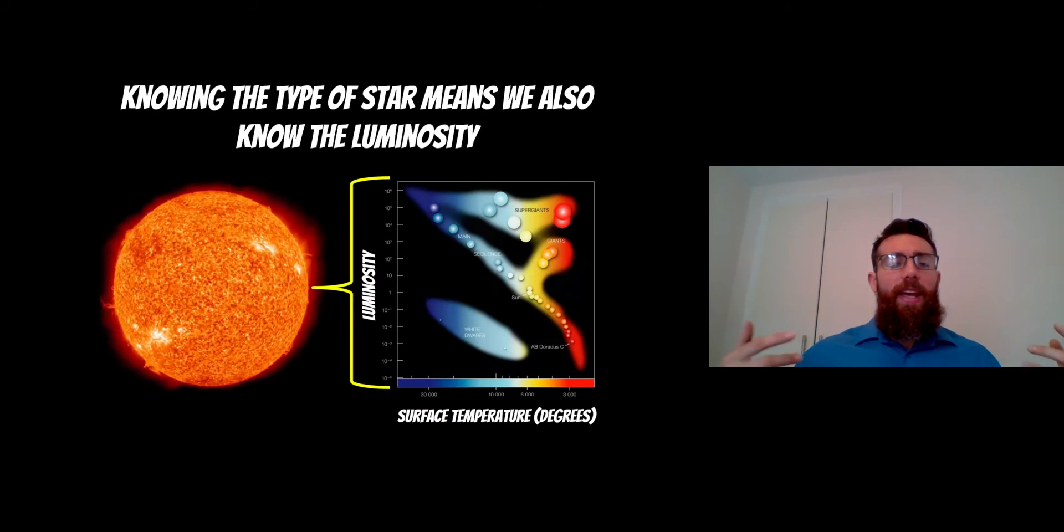If we know what type of star it is, we can work out what the luminosity would be and therefore the absolute magnitude. On the HR diagram, if we know the spectral type—how hot it is, the surface temperature, how big the star is—we can work out its luminosity, which is a direct relation to absolute magnitude. If we know all of that, we can get the absolute magnitude.